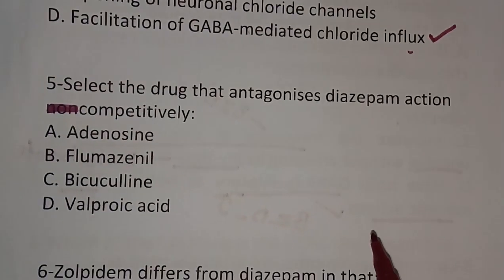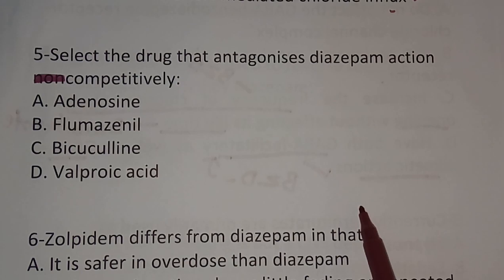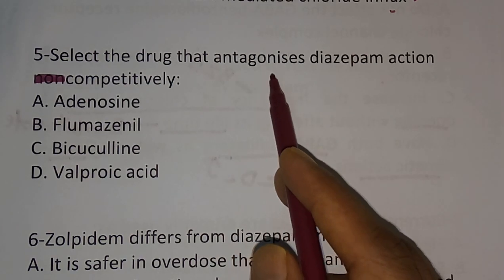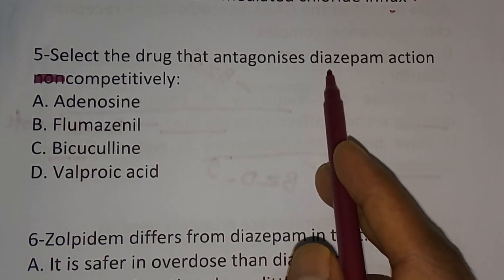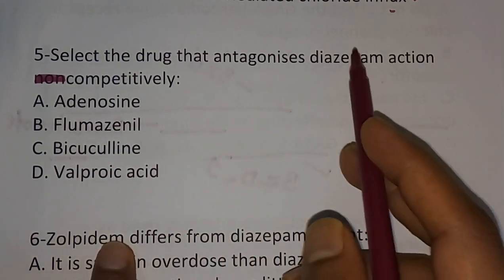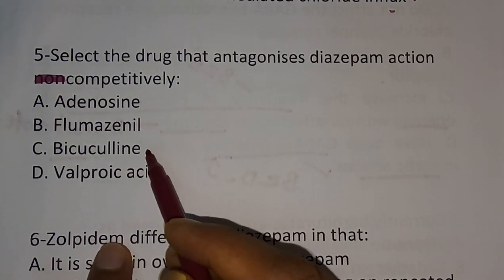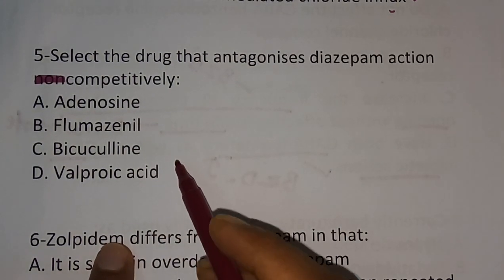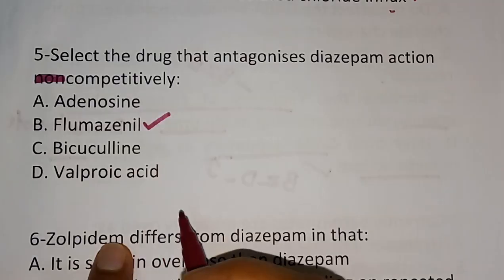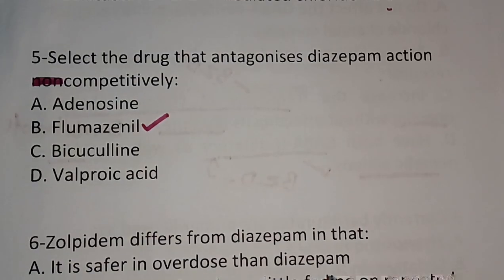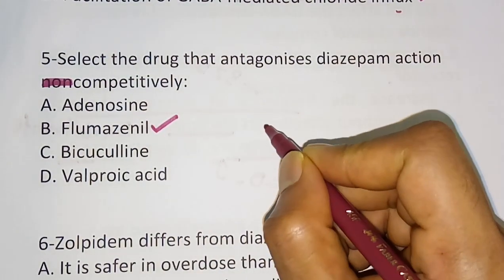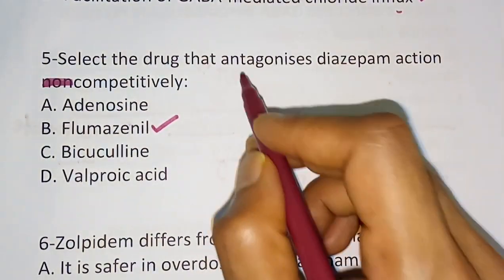Question number 5: select the drug that antagonizes the diazepam action competitively. Options are: A) adenosine, B) flumazenil, C) bicuculline, D) valproic acid. The correct answer is flumazenil. Flumazenil is the benzodiazepine antagonist — the diazepam antagonist. This is also one important question you have to study very well.